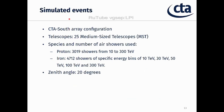For preliminary results, we use simulated events with the CTA southern array configuration, using only one type — medium-size telescopes — 25 of them, for two kinds of primary particles: proton and iron events, in the energy range from 10 to 300 TeV, for one unique zenith angle of 20 degrees.